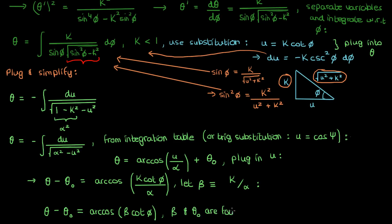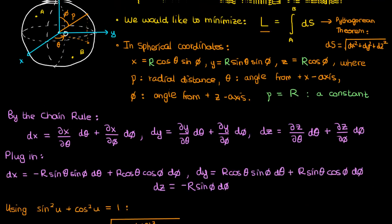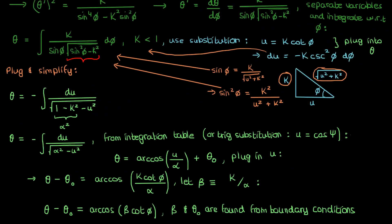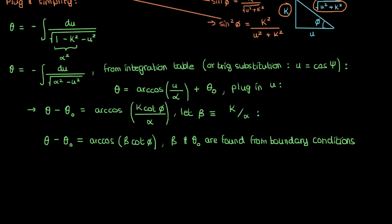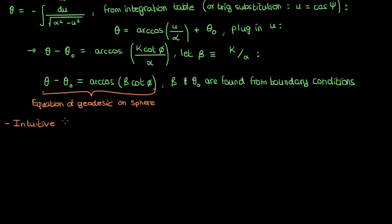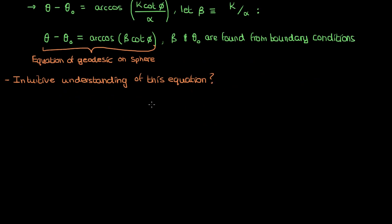So now we've finally found the equation of a geodesic on a sphere. However, if you stare at this equation and try to imagine what it means intuitively, you won't really get anywhere because the arc cosine of a cotangent is a little too complicated to understand intuitively. At least with the geodesic on a plane, we could look at the answer and say, oh that's just a straight line. But when we look at the geodesic on a sphere, we can't really say what this equation means just by looking at it. Or can we? Let's take a quick detour first.